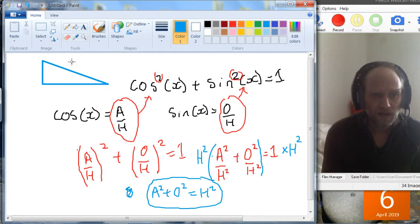So if this is h, o, and a, we can say o² + a² = h².